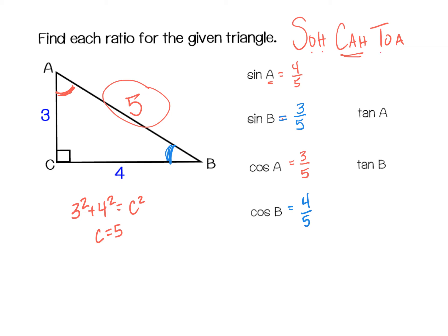Now let's take a look at the tangents. Tangent is opposite over adjacent. For tangent of A, the opposite side is 4 and the adjacent side is 3, so tangent of A is 4 over 3. For tangent of B, the opposite side is 3 and the adjacent side is 4, so tangent of B is 3 over 4. That's pretty straightforward.